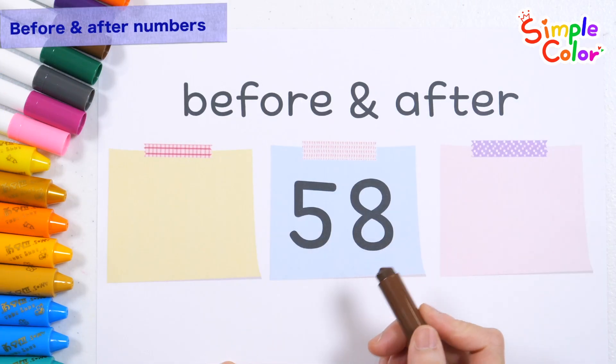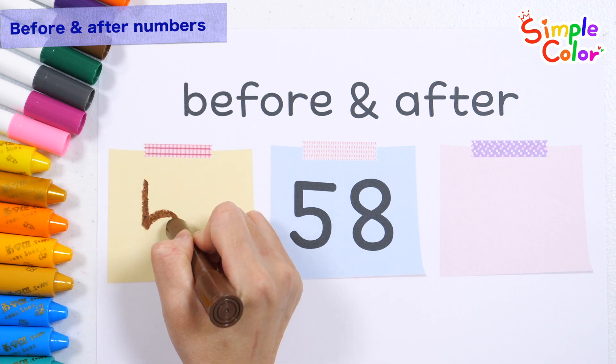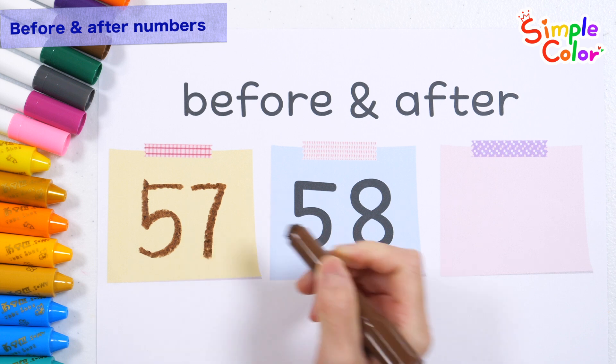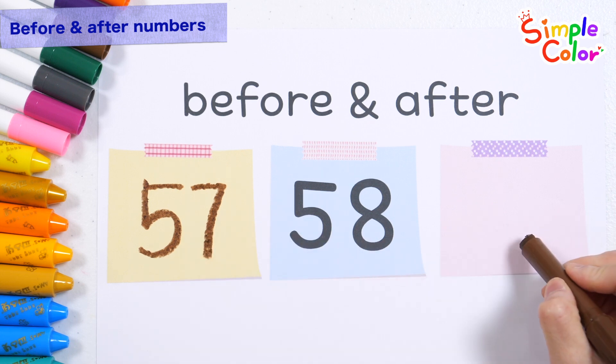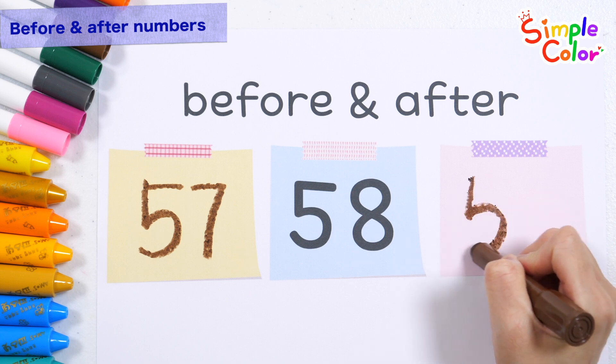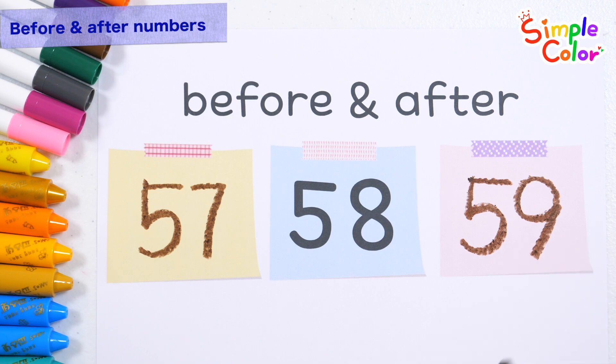What is the before and after of the number 58? Before is 57. After is 59. Very good!